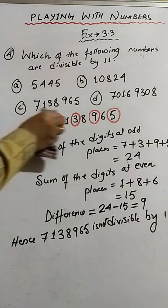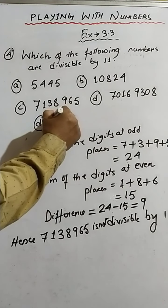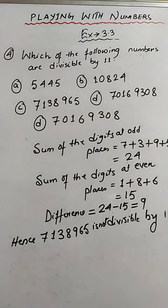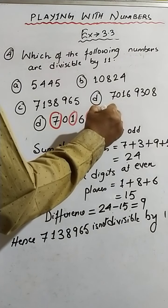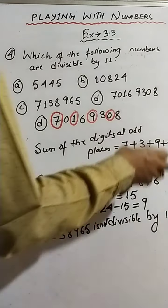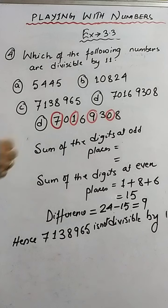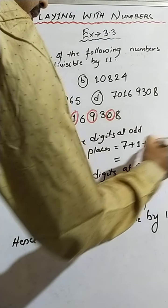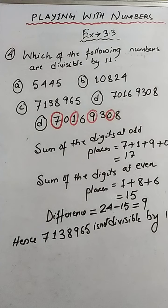Now let's move on to sum number D. The number is 7, 0, 1, 6, 9, 3, 0, 8 — a big number. Let me encircle the digits at odd places: 7, 1, 9, and 0. Adding these: 7 plus 1 plus 9 plus 0 gives us 17.